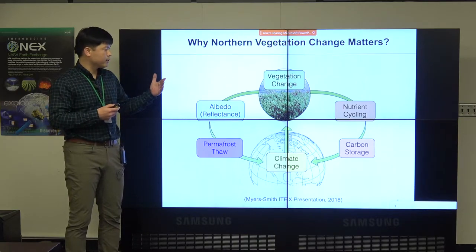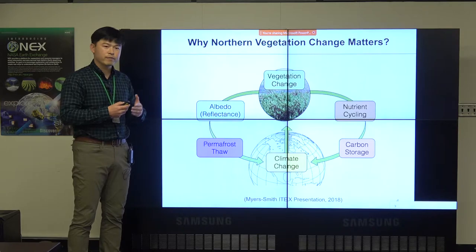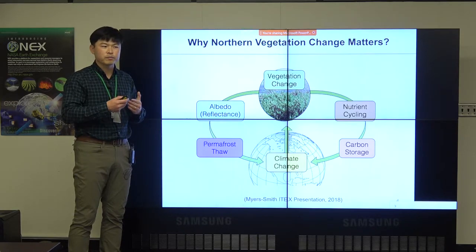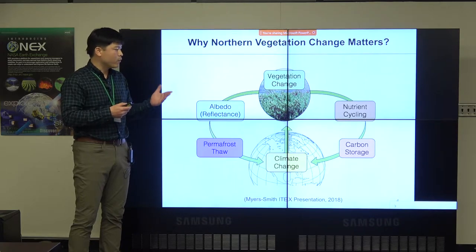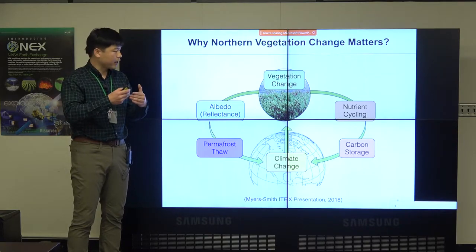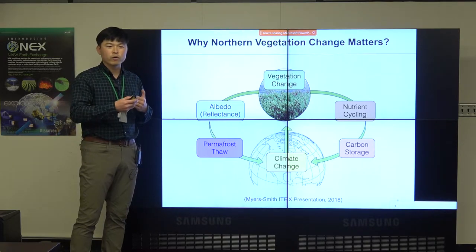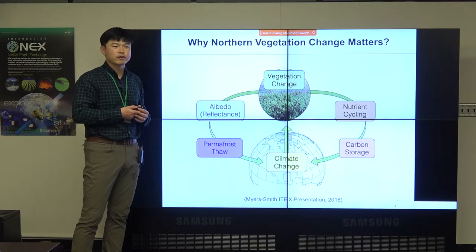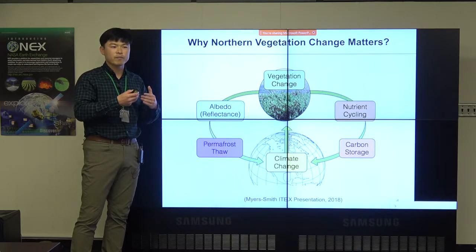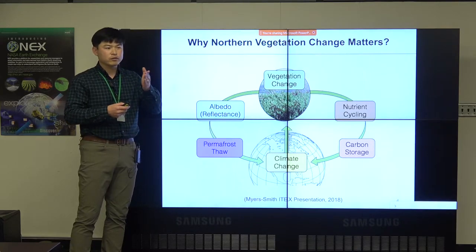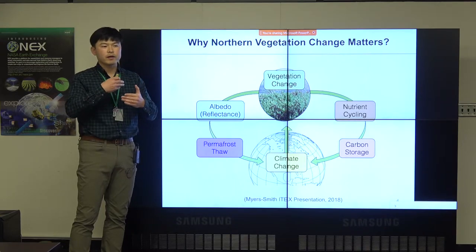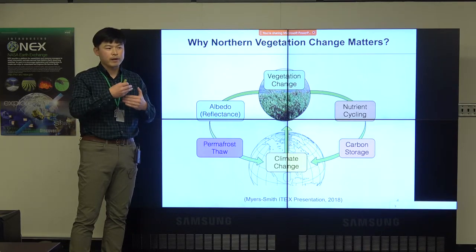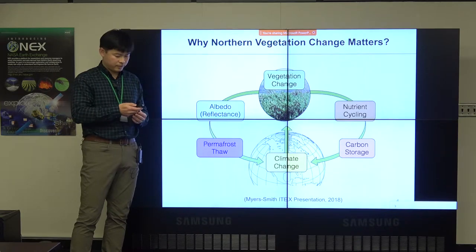For example, vegetation can change the albedo of the surface, which will impact the energy balance of the earth's surface, and that can also affect the nutrient cycle, water cycle, and carbon cycle in the earth's system. This is very important to understand because it can feed back to the earth's system and create positive or negative feedback mechanisms.